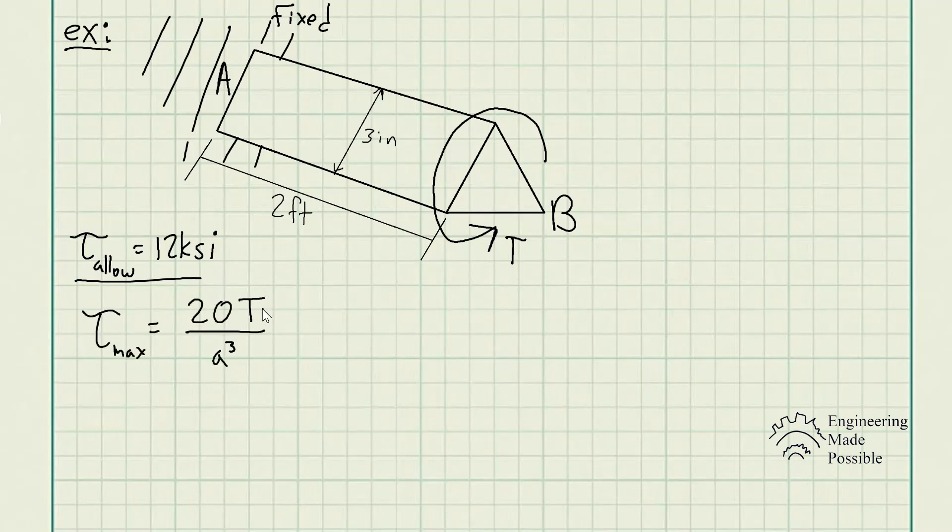The max shear stress for a triangular shaft is 20 times the torque divided by A cubed. In this case, the sides of this triangle is A, and we know A is 3 inches here.